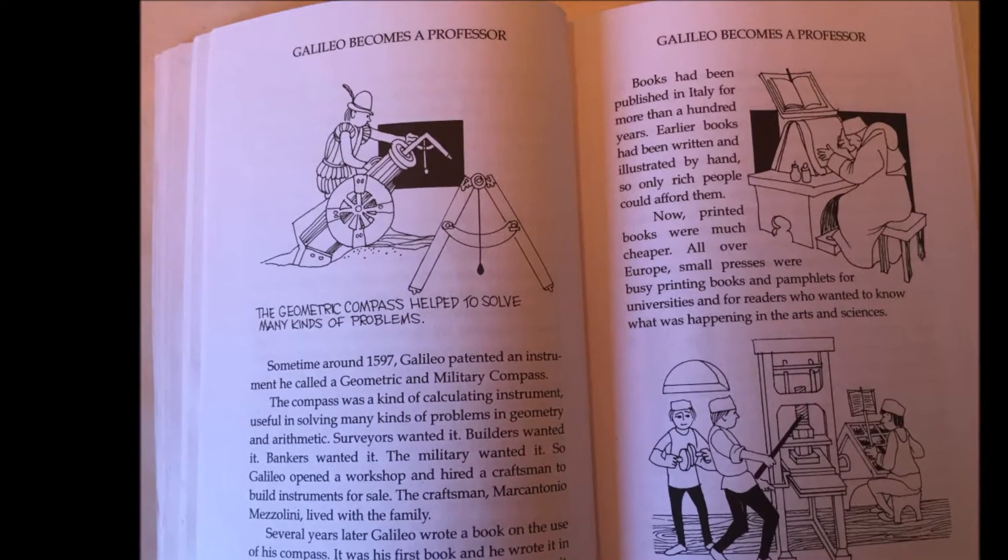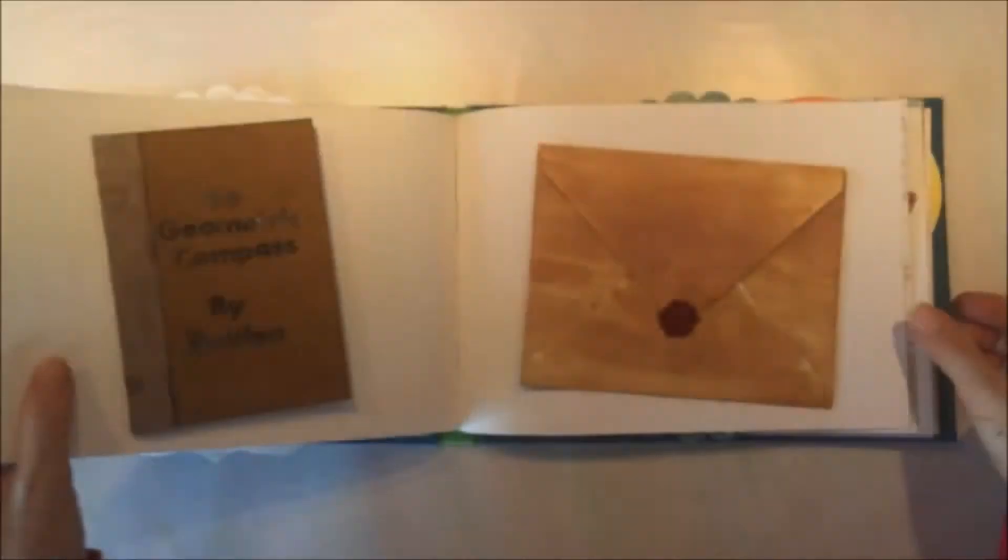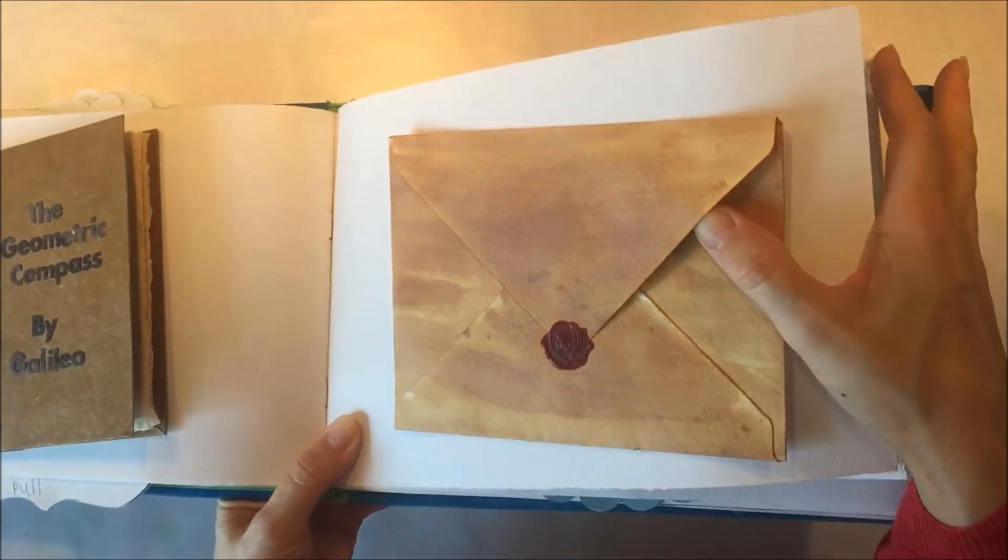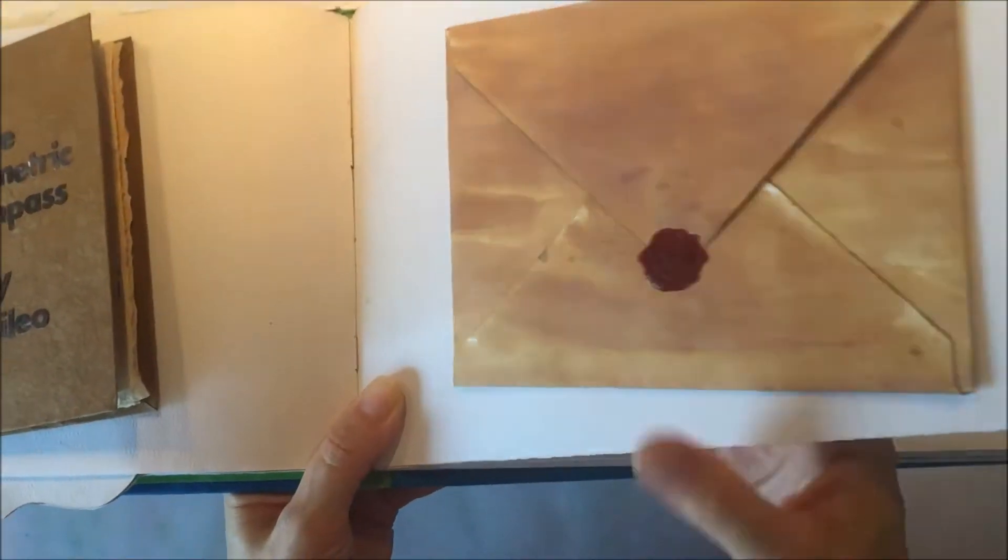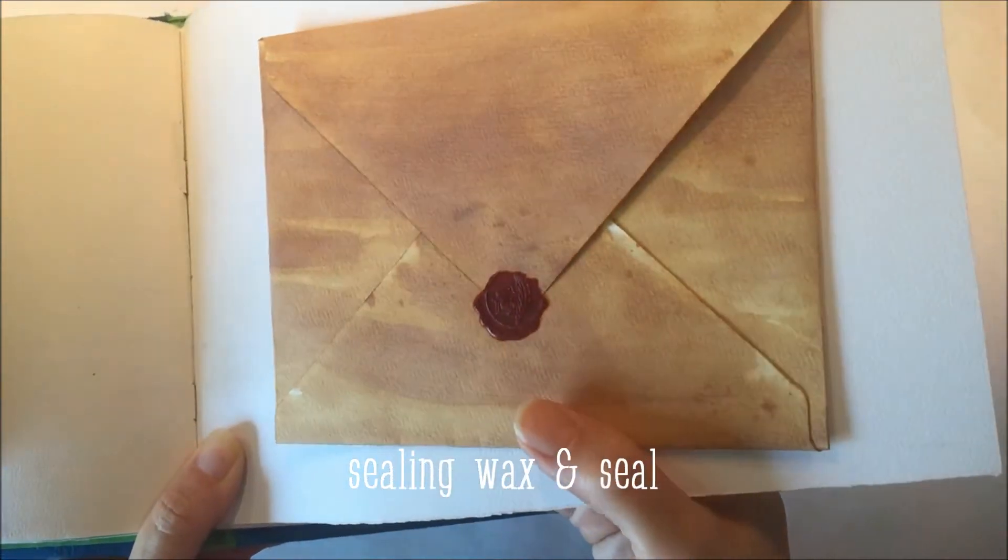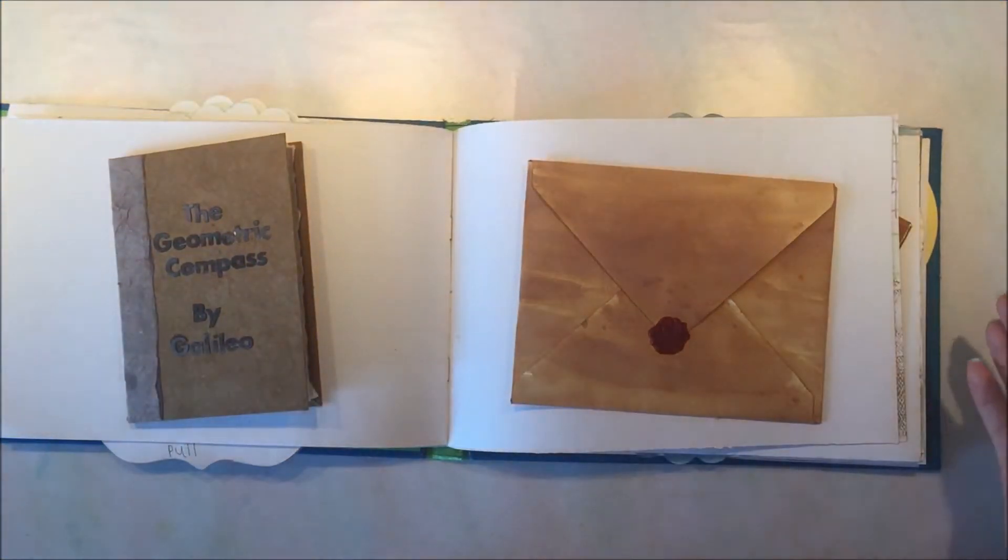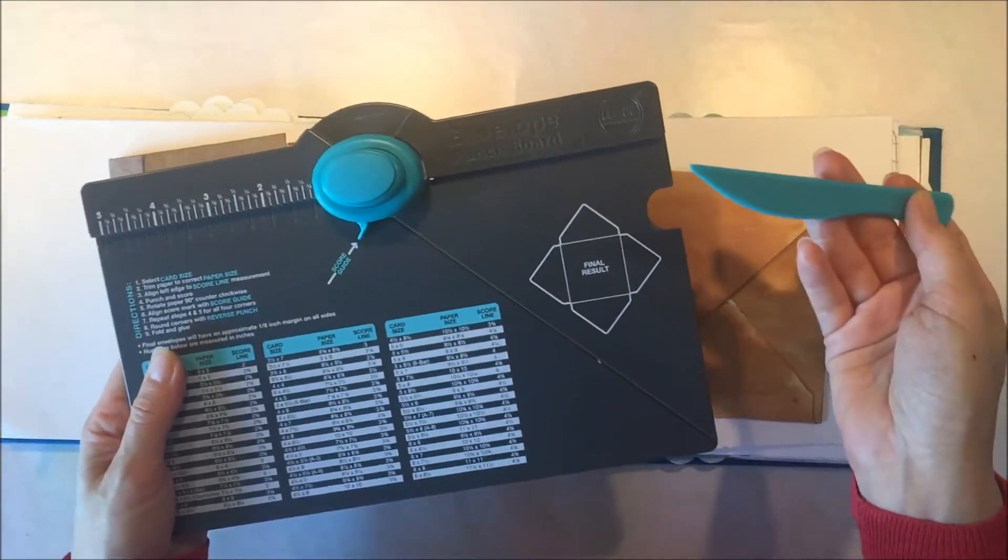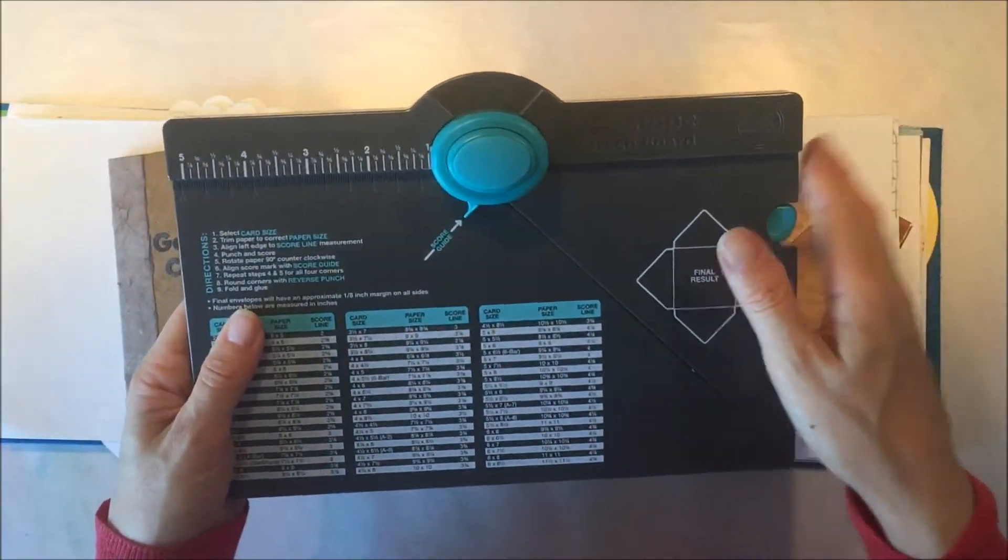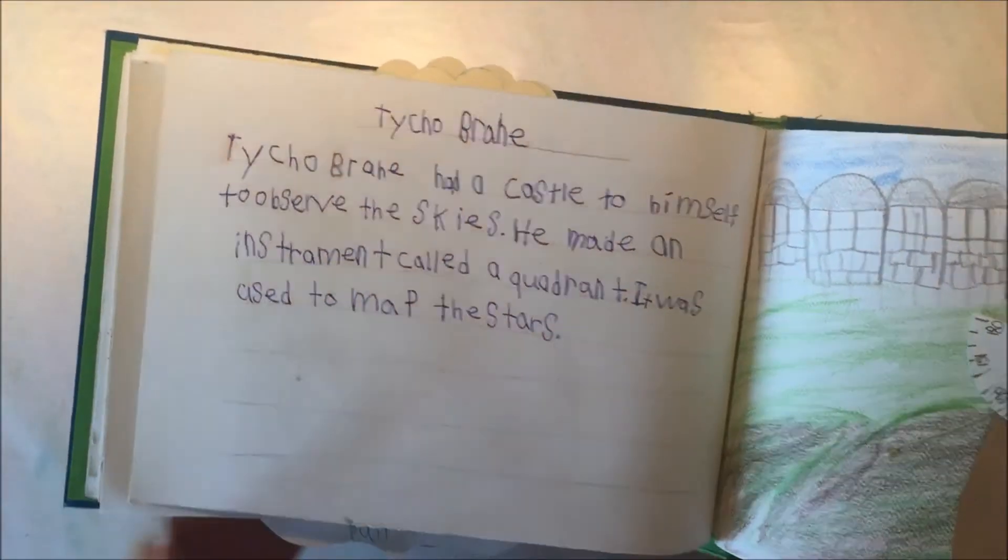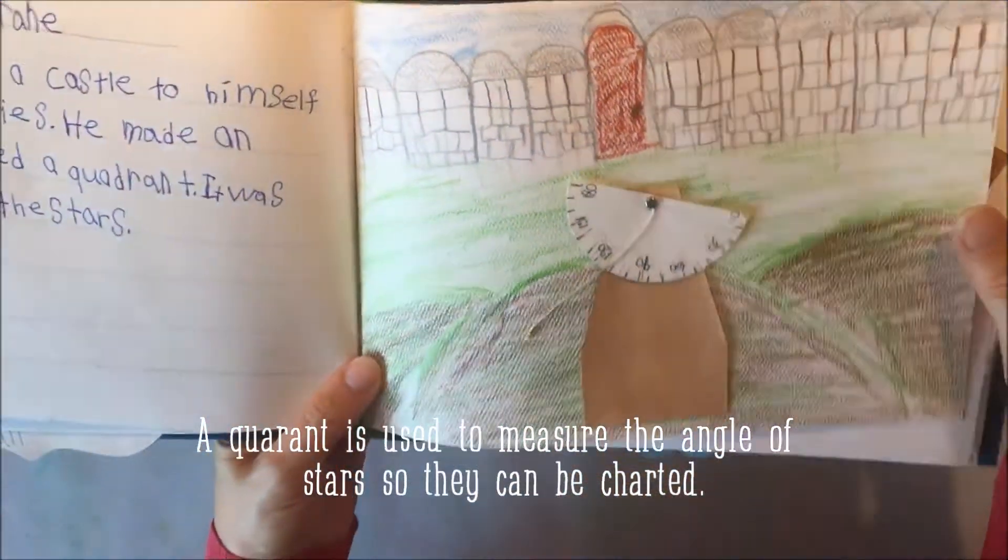So next up is the geometric compass that Galileo invented. And he had a book published all about it. And so we made our own little book and wrote about the geometric compass. And then that is an envelope that we made using this envelope punch board. And we have a letter inside, but I didn't open it, I didn't crack the seal. And it was a letter to Kepler because Galileo and Kepler and some of the other scientists used to converse with one another.